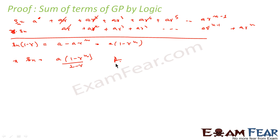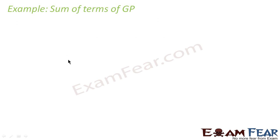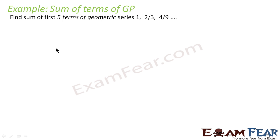Very simple. What we have done: we took Sn, multiplied Sn by r, subtracted the two equations to get Sn times (1 minus r) equals a times (1 minus r to the power n), giving us Sn. Now let's take one example — we are asked to find the sum of 5 terms of a GP.